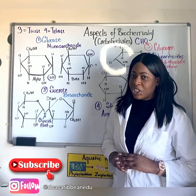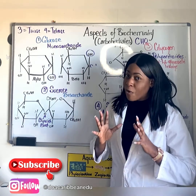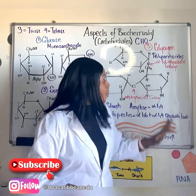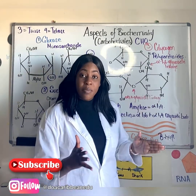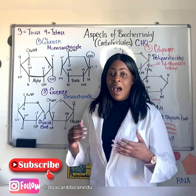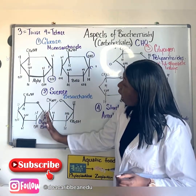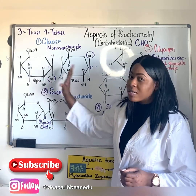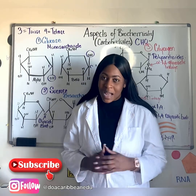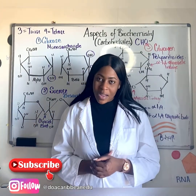During condensation, monosaccharides are joined covalently to form disaccharides or polysaccharides with the liberation of water. Conversely, hydrolysis involves the breaking of the glycosidic bond between the two monosaccharide molecules. Let's talk about the five important examples of carbohydrates that you must know for your examination.